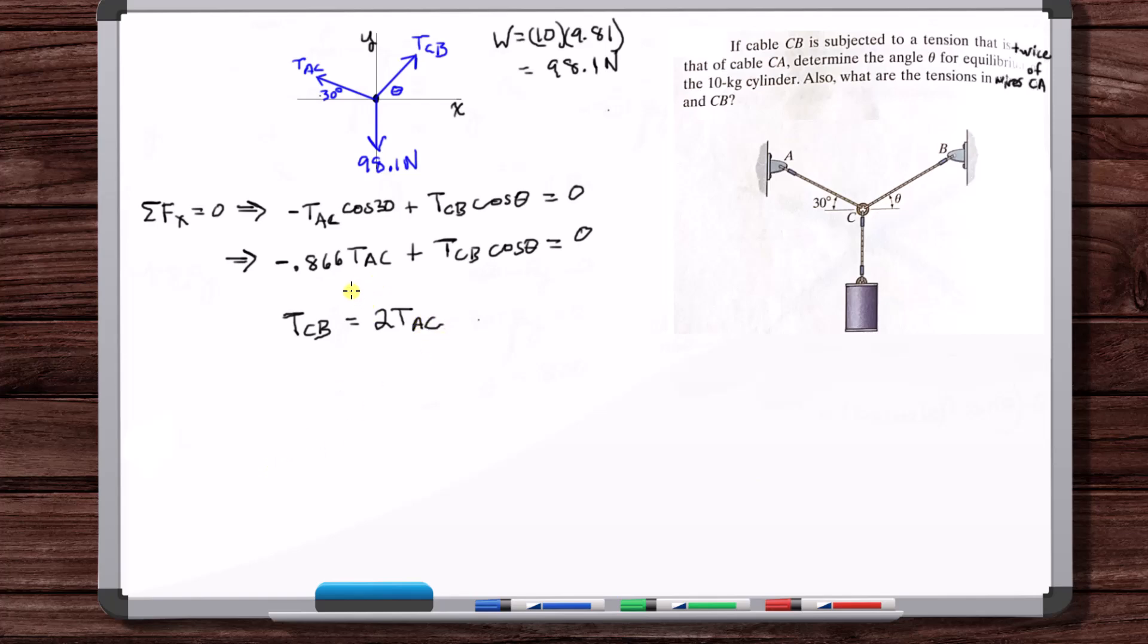Okay, so we can let's bring these two together. So minus 0.866 T_AC plus 2 T_AC cosine theta is equal to zero. Okay, so if we sum the forces in the y and then we should be able to solve for something using this in combination with this equation.